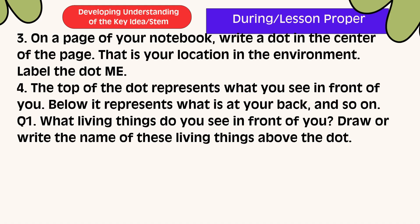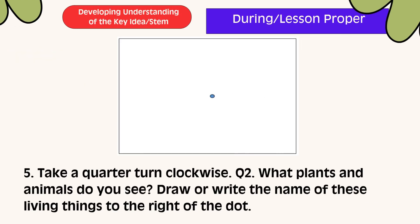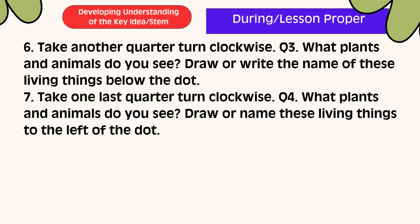Question 1: What living things do you see in front of you? Draw or write the name of these living things above the dot. Number 5: Take a quarter turn clockwise. Question 2: What plants and animals do you see? Draw or write the name of these living things to the right of the dot. Take another quarter turn clockwise. Question 3: What plants and animals do you see? Draw or write the name of these living things below the dot. Take one last quarter turn clockwise. Question 4: What plants and animals do you see? Draw or name these living things to the left of the dot.